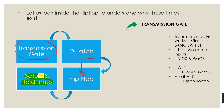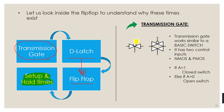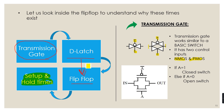Let us start with the transmission gate. The logic symbol of the transmission gate looks like this — any of the symbols can be used for its representation. The work of the transmission gate is very similar to a basic switch. It has two control inputs, C-bar and C, and the input is supplied to one terminal while the output is taken from the other. It has two MOSFETs — one NMOS and one PMOS — structured in this manner.